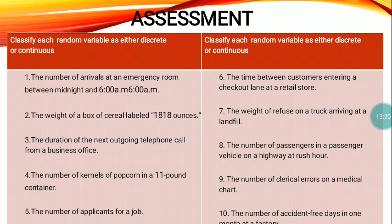Number eight: the number of passengers in a passenger vehicle on a highway at rush hour. Again, the number of passengers in a passenger vehicle on a highway at rush hour. Number nine: the number of clerical errors on a medical chart. Number ten: the number of accident-free days in one month at a factory.